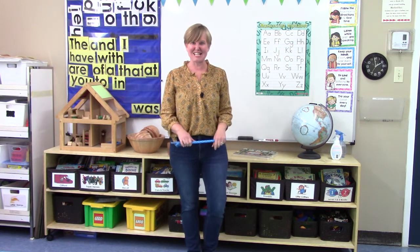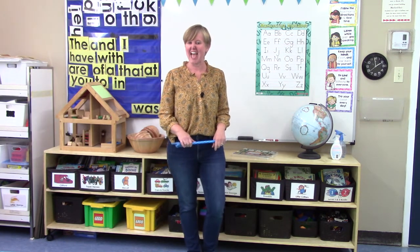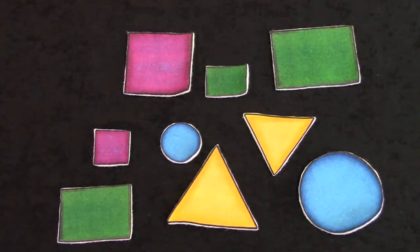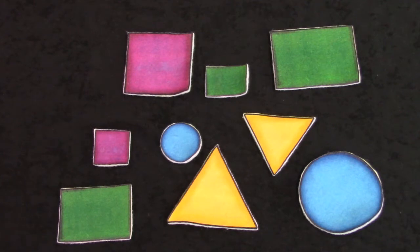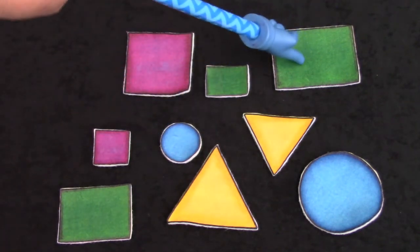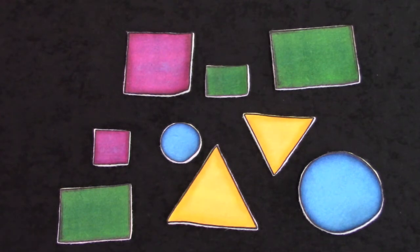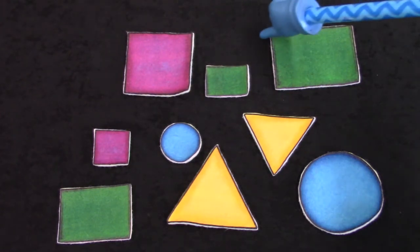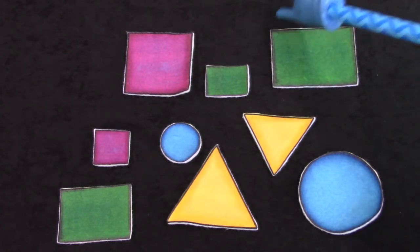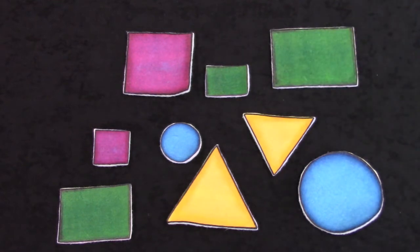I think that you should go on a scavenger hunt and look for rectangles today. Class, let's go on a shape hunt here. Can you see the rectangles? Point to them. Here's a rectangle. And here's a tiny little rectangle, and this is our largest rectangle. Remember that our rectangles have one, two, three, four sides, and they have one, two, three, four angles.